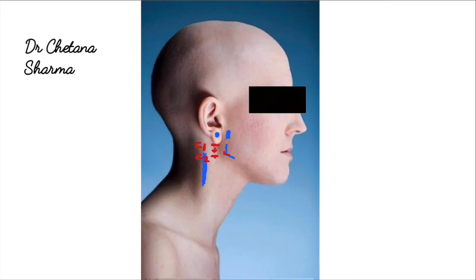When you move your finger further down, you can palpate the transverse process of C3 vertebra also. But from C4 vertebra, the transverse process is very hard to palpate because of the overlapping of muscles.